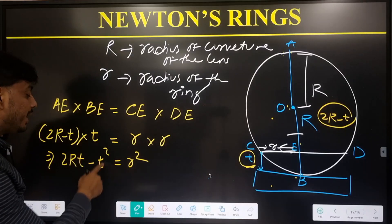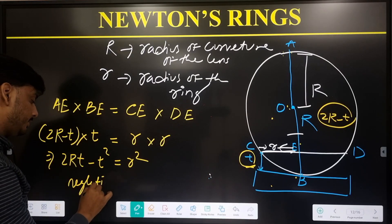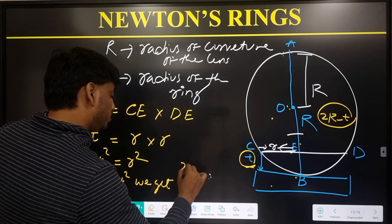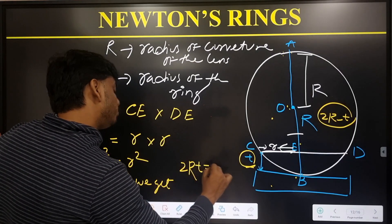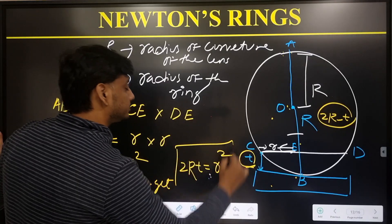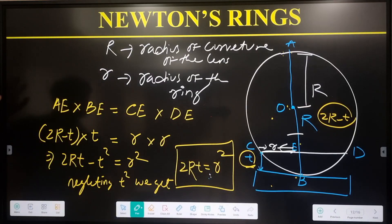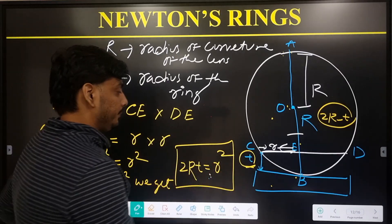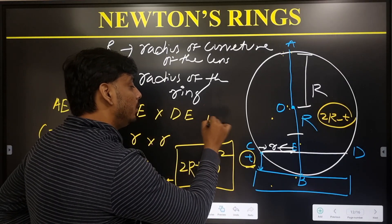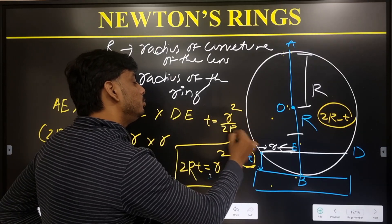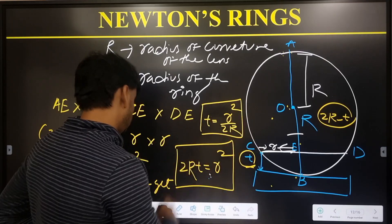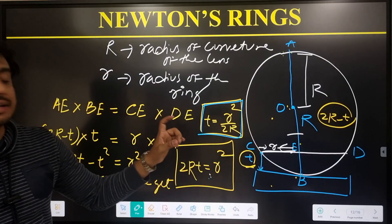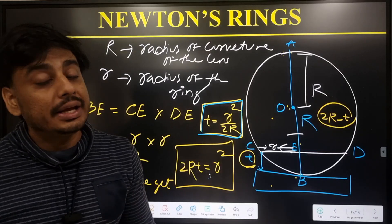Since the thickness t of the thin film is very small, we can neglect the t² term. So we get t = r²/(2R). Remember this formula - the thickness of the thin film at radius r is t = r²/(2R).